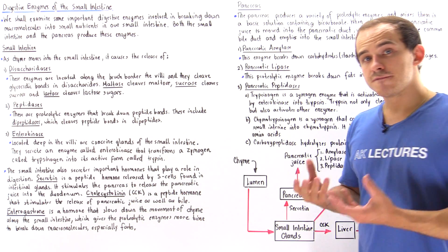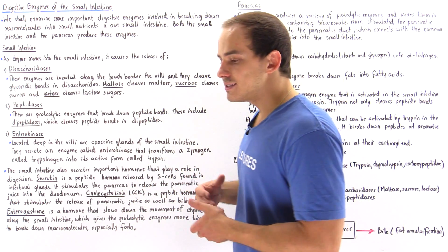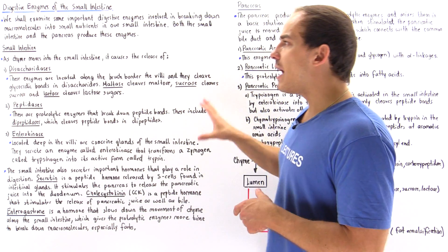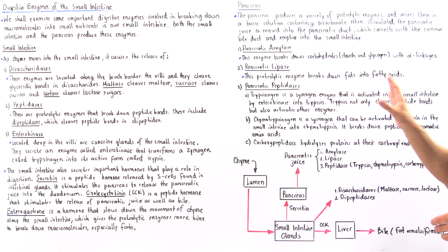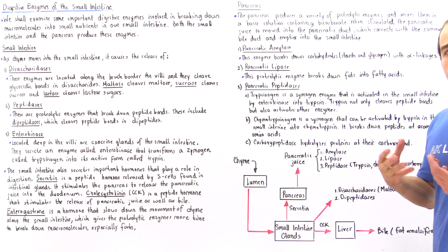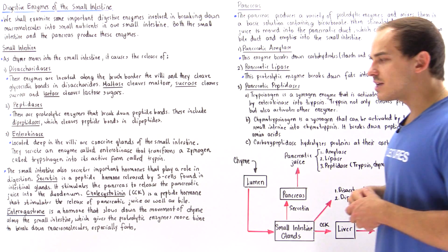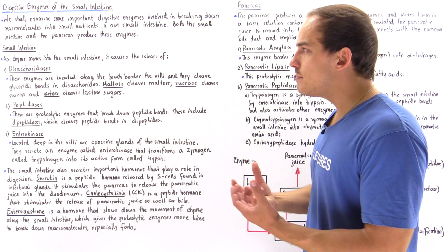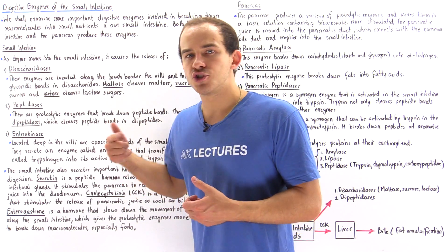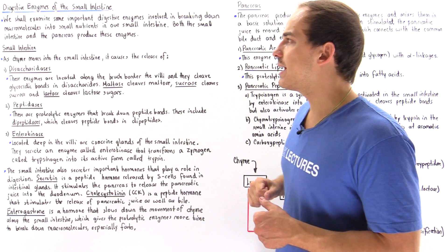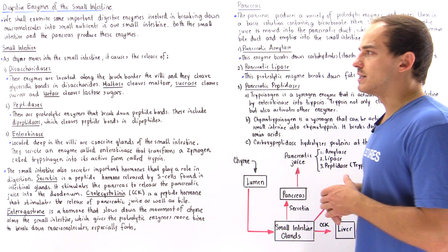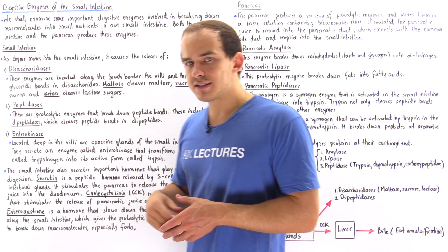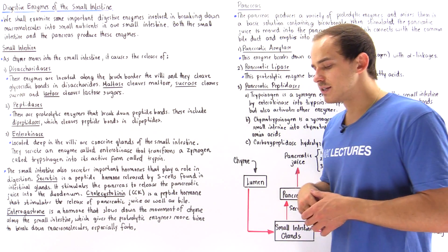In this lecture we're going to focus on the proteolytic digestive enzymes that are produced by the small intestine as well as by the pancreas. We're also going to discuss several important hormones that stimulate the process of digestion that are released by the small intestine. So let's begin with the proteolytic digestive enzymes of the small intestine.